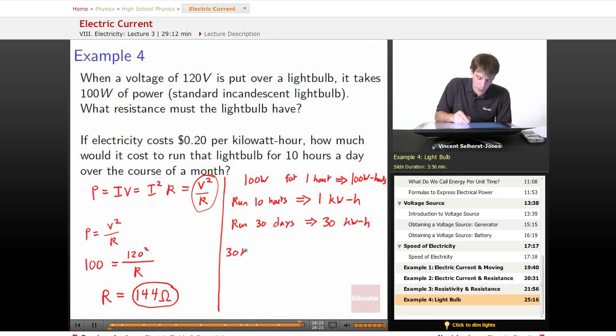Well 30 kilowatt hours times 20 cents per kilowatt hour, we wind up getting it costs $6.